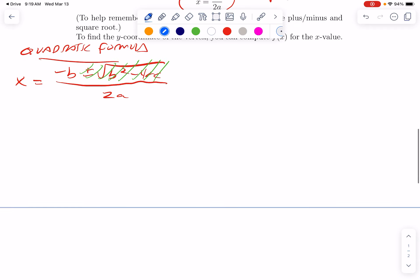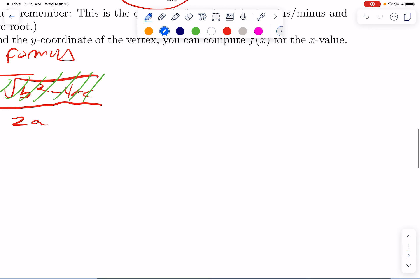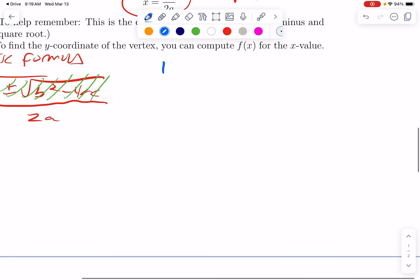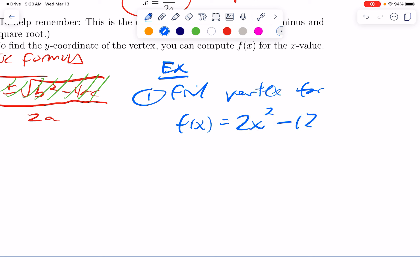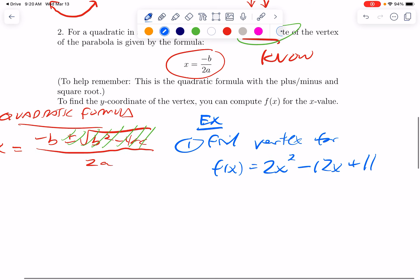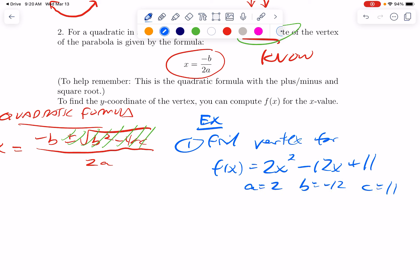So let's look at an example. I'll show you an example, and then I'll pause while you try another one. So let's find the vertex for f of x equals, let's say, 2x squared minus 12x plus 11. So I have this shortcut for finding the x coordinate. I will notice a equals 2, b equals negative 12, c equals 11.